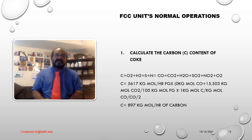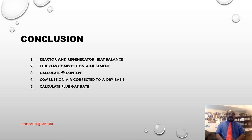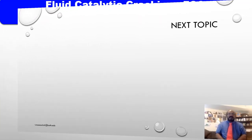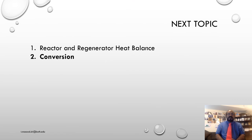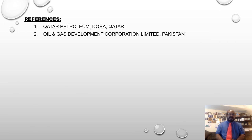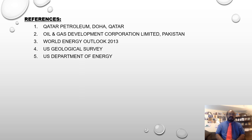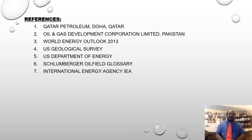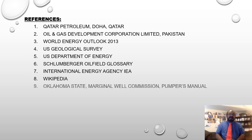Conclusion. We have discussed reactor and regenerator heat balance, flue gas composition adjustment, calculation of carbon content, combustion air corrected to a dry basis, and calculation of flue gas rate. My next topic will be reactor and regenerator heat balance, continuing with conversion. References include: Qatar Petroleum, OGDC Pakistan, World Energy Outlook, U.S. Geological Survey, U.S. Department of Energy, Schlumberger, International Energy Agency IEA, Wikipedia, Oklahoma State Margin Well Combustion Pumper's Manual, State Oil Fact Sheet Norge, Prox Standard of Norway, The Story of Oil in Pennsylvania, Air Liquid and Gas Encyclopedia, and Natural Gas from Wellhead to Burnertip.